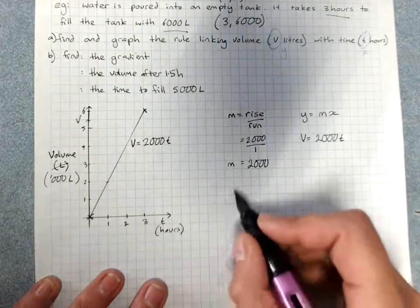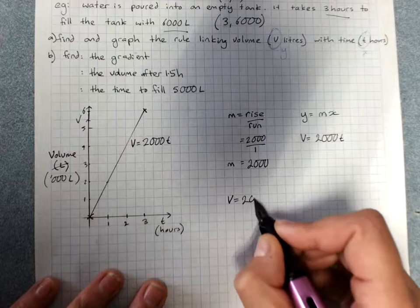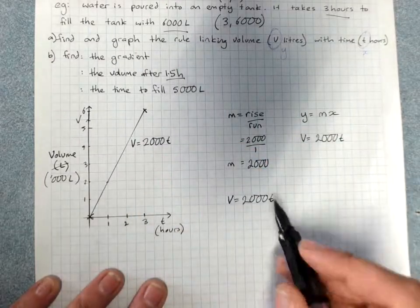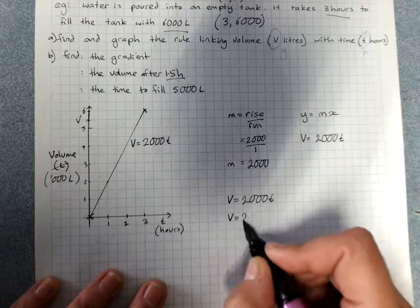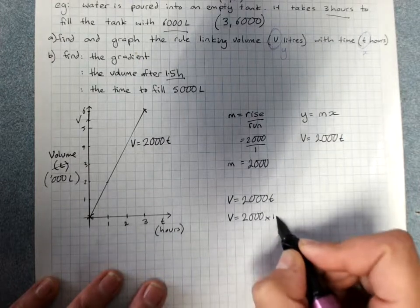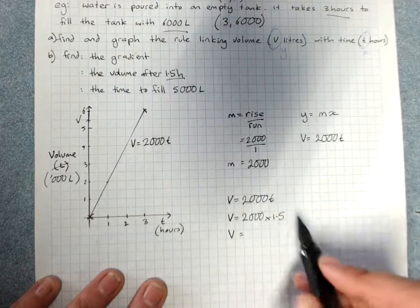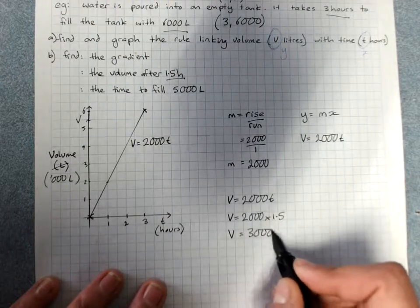Use the formula. V equals 2,000 T. I want the time to be 1.5 hours. V equals 2,000 times 1.5. So the volume after 1.5 hours is 3,000 liters.